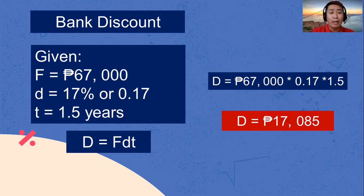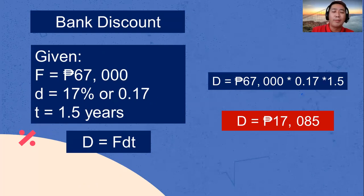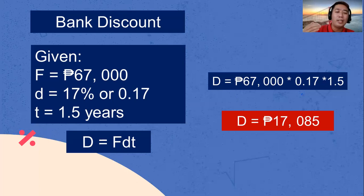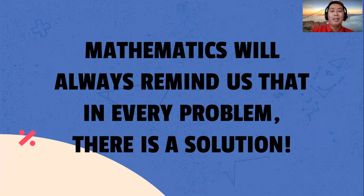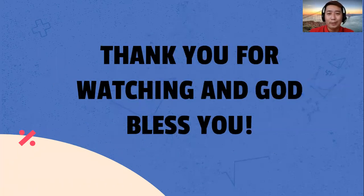I hope you were able to follow our simple process on how to solve the bank discount — simply multiply the maturity value by the discount rate and by the time. And we are finished with our discussion. Always remember: mathematics will always remind us that in every problem, there is a solution. Thank you for watching and God bless you. See you on our next tutorial.